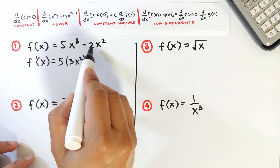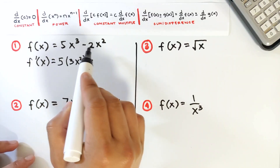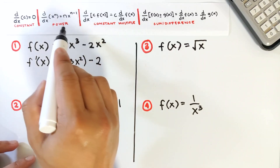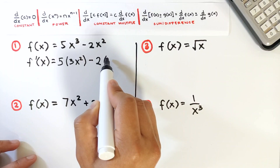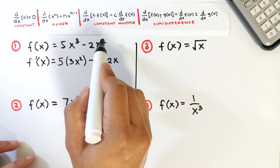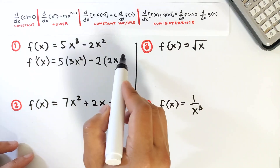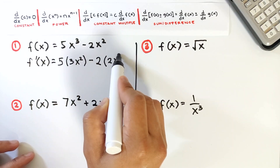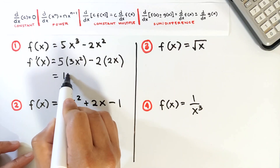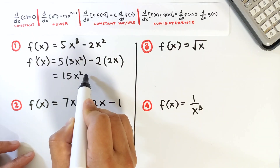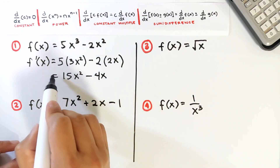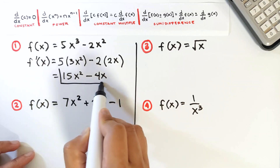For the second term, we copy the coefficient 2, and then find the derivative of x squared using the power rule: bring down 2, copy the variable, and subtract 1 from the exponent, so 2 minus 1 is 1. Multiplying: 5 times 3 is 15, giving 15x squared, minus 2 times 2 is 4, giving 4x. So the final derivative is 15x squared minus 4x.